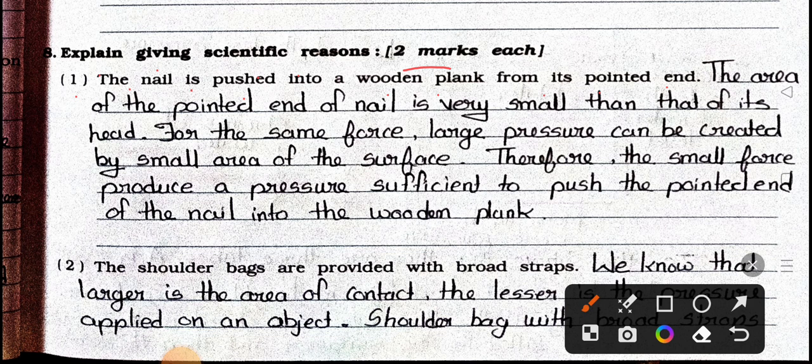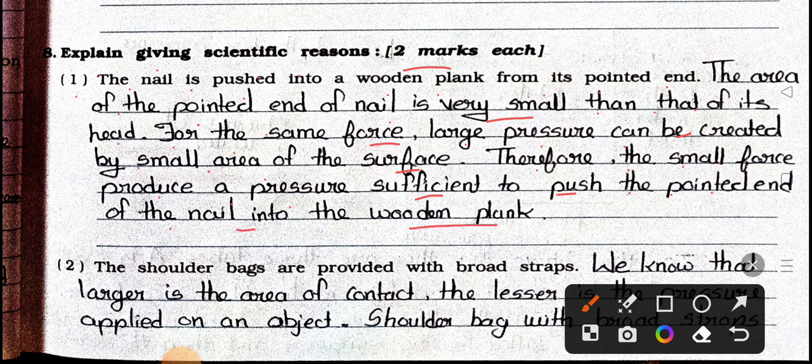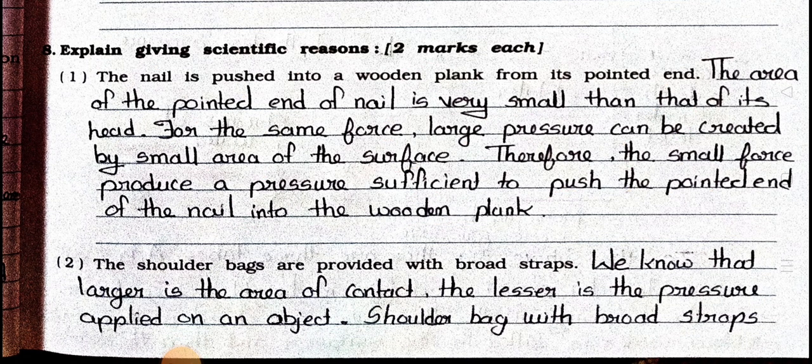Answer: The area of the pointed end of the nail is very small compared to that of its head. For the same force, large pressure can be created by small area of the surface. Therefore, the small force produces pressure sufficient to push the pointed end of the nail into the wooden plank.